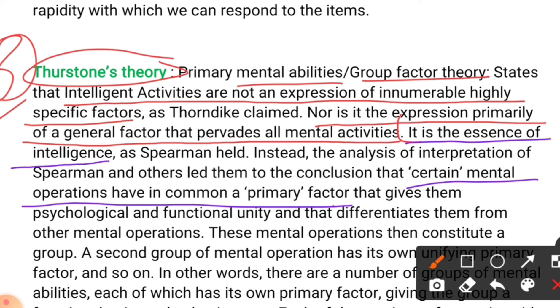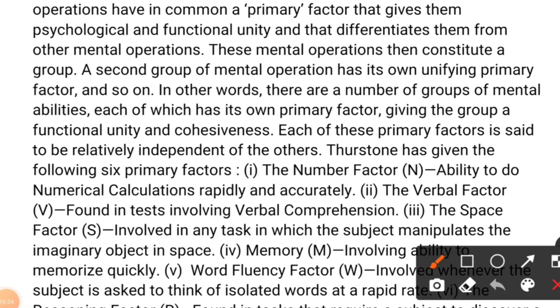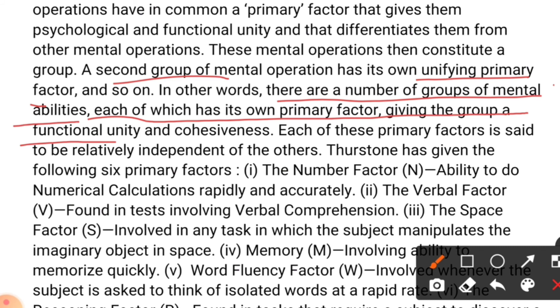These mental operations constitute a group. A second group of mental operations has its own unifying primary factor, and so on. In other words, there are a number of groups of mental abilities, each of which has its own primary factor, giving the group a functional unity and cohesiveness. Each of these primary factors is said to be relatively independent of the others.